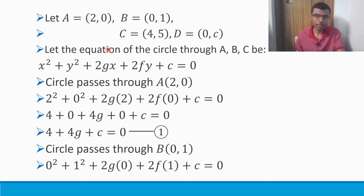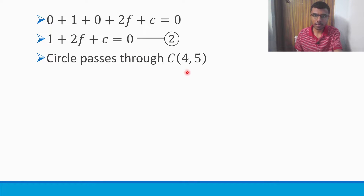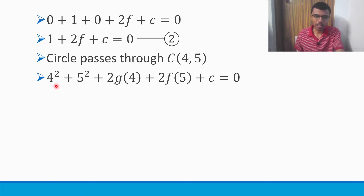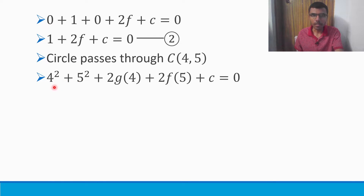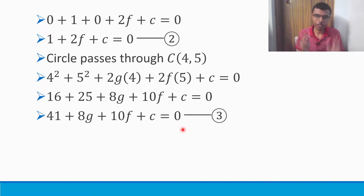In our same equation, I'm going to substitute point C. The circle passes through (4, 5). So 4² + 5² + 2G×4 + 2F×5 + C = 0. If you solve it, 4² is 16, 5² is 25, giving 8G and 10F. 16 + 25 is 41. So this is my third equation.